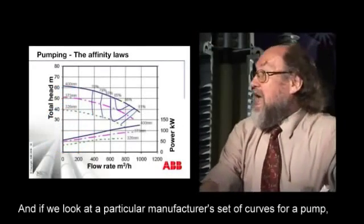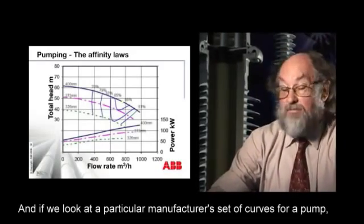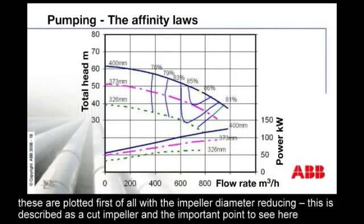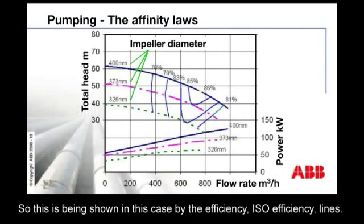If we look at a particular manufacturer's set of curves for a pump, these are plotted with the impeller diameter reducing — described as a cut impeller. The important point to see here is that the flow-head-volume curves all decline, but the efficiency curves actually tend to reduce as the impeller cut increases. This is shown by the isoefficiency lines.